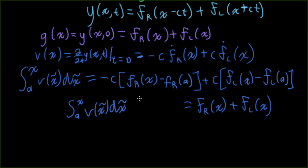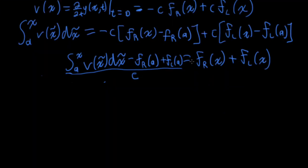Now what I want to do is I want to have fr and fl on one side of the equation by itself. So I'm going to write equals frx plus flx. And then on the left, I'll have integral going from a to x, my vx tilde dx tilde. And then moving over to this side, I'll have minus f r a and then plus f l a. And the elephant in the room that I've been ignoring is that there's a c here. So I need to divide everything here by c. And I forgot a minus sign here.